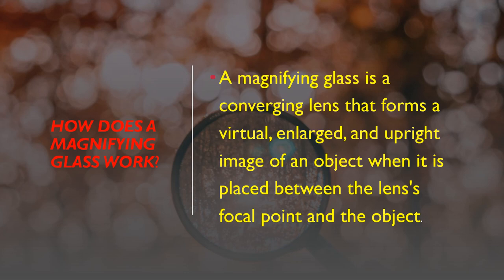How does a magnifying glass work? A magnifying glass is a converging lens that forms a virtual, enlarged, and upright image of an object when it is placed between the lens focal point and the object.